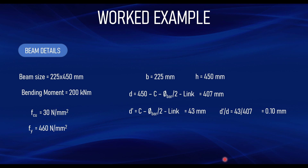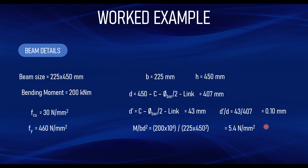So now we can determine which chart to use: fcu is 30, fy is 460, and d' over d is 0.1. Before going to the chart, let us evaluate m over bd². Taking a moment of 200 kNm (200 × 10⁶ N·mm), b is 225 mm and d is 407 mm (not 450). At the end of the day you get approximately 5.4 N/mm². This is all you need to design for the tension and compression reinforcement of the beam.